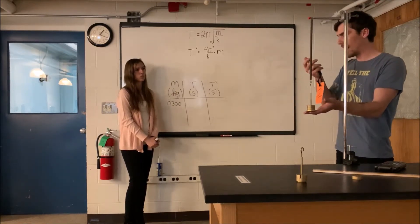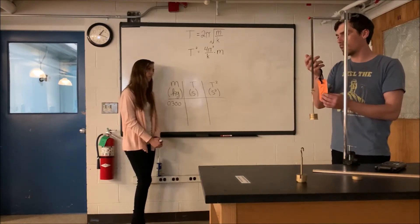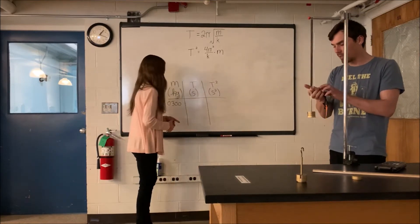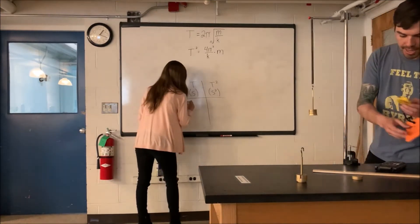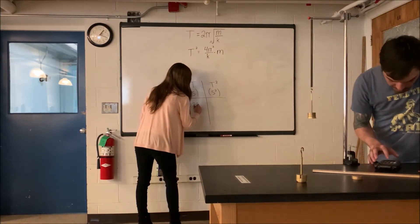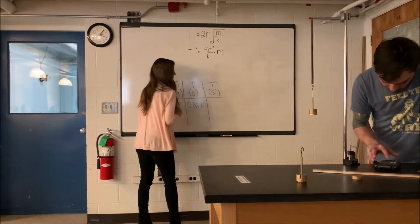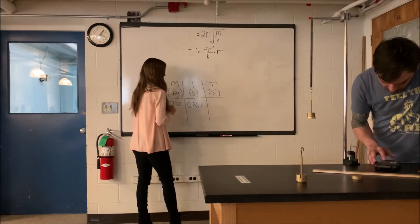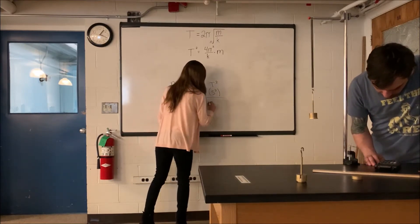All right, so 8.69 seconds is the time for 10 oscillations. Divide that by 10, 0.869 seconds will be the period of one oscillation. And I want to square that number. That's 0.755.